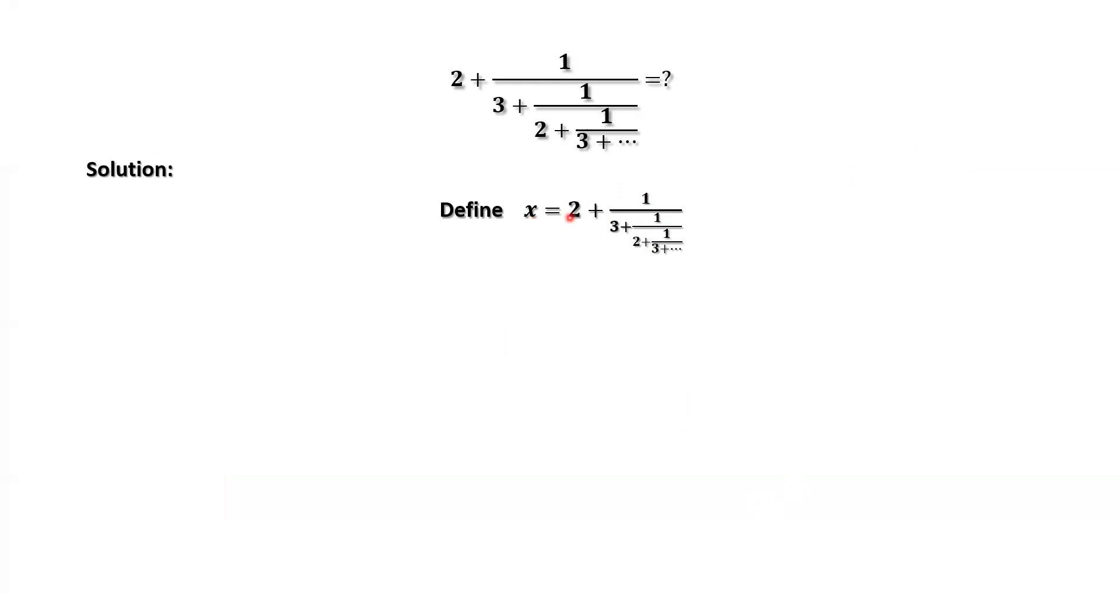From this pattern, 2, 3, 2, 3, we can see this part. Start from this part, 2, 3. We can see that this part is also x. Therefore, we have x equals 2 plus 1 over 3 plus 1 over x.